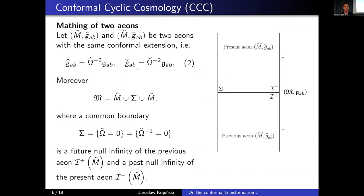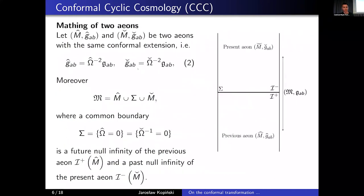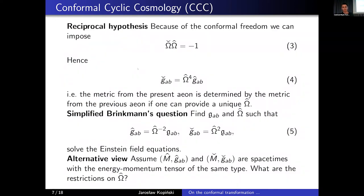Even though I assume those two spaces have the same conformal extension, I still have some freedom in the conformal rescaling. I can use this freedom to impose something which Penrose called the reciprocal hypothesis, which is just the assumption that the product of those two functions omega-hat and omega-check equals minus one, as in equation three. If we look at equation three and go back to the relation between those three metrics given in equation two, we see that the metrics from the previous and present eons can be related as in equation four. So the metric from the present eon is fully determined by the metric from the previous eon if we can provide a unique way to define the conformal factor omega-hat.